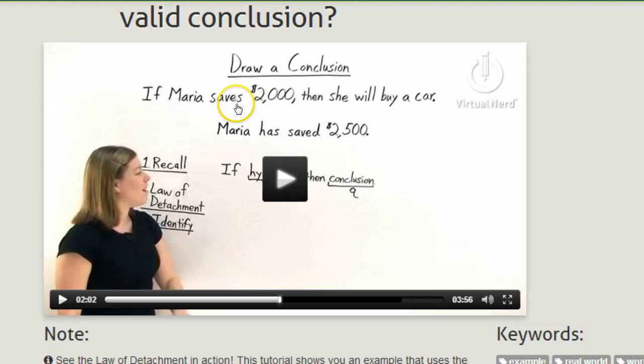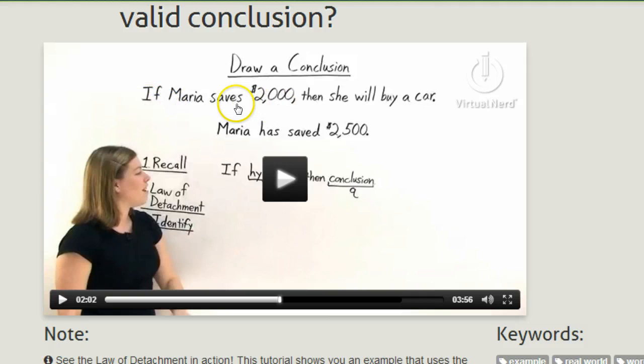Okay. So as you guys can clearly see, if we identify the hypothesis for the law of detachment, if this is true, if Maria saves 2,000 and she has in fact saved 2,500,